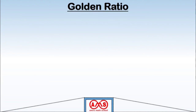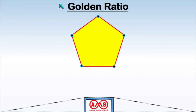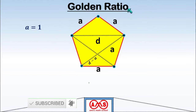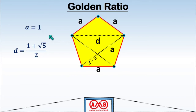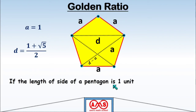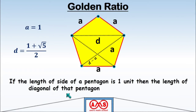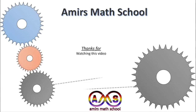Now let us find the value of the golden ratio from the pentagon. Consider a regular pentagon where the length of each side A equals 1. In that case, D equals (1 plus square root of 5) divided by 2. This is the value of the golden ratio. So in any regular pentagon, when the length of each side is 1 unit, the length of the diagonal equals the golden ratio.